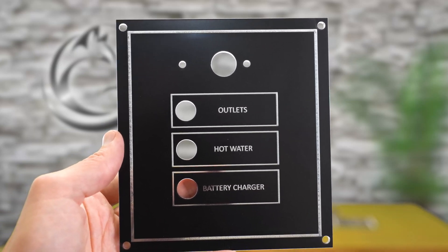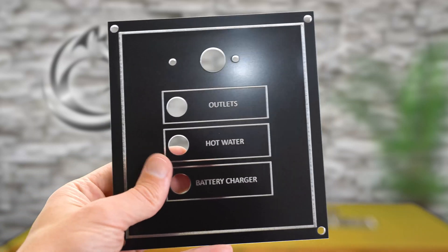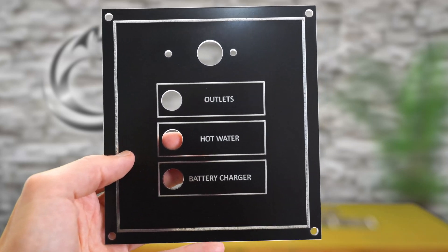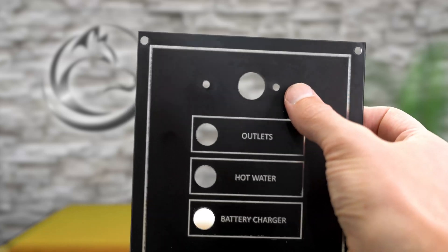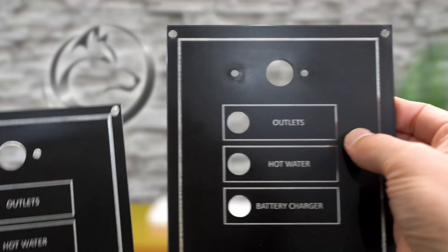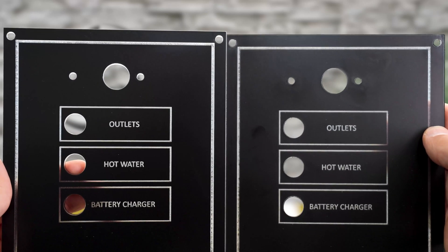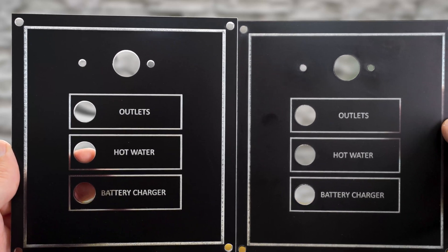On the smaller panel I have the same great results on this one. Again, the engraving is facing towards the camera. And then on the mirrored version the engraving is on the back side, so this front side is perfectly smooth. And with these smaller panels we can take a look at them side by side.